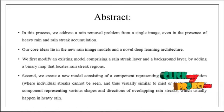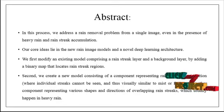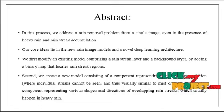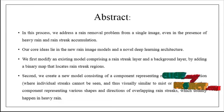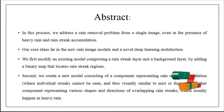In this process, we address a rain removal problem from a single image, even in the presence of heavy rain and rain streak accumulations. Our core idea lies in new rain image models and a novel deep learning architecture to remove rain streaks from the image. We first modify an existing model comprising a rain streak layer and a background layer, by adding a binary map that locates the rain streak region separately.